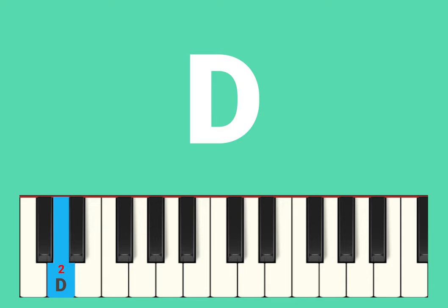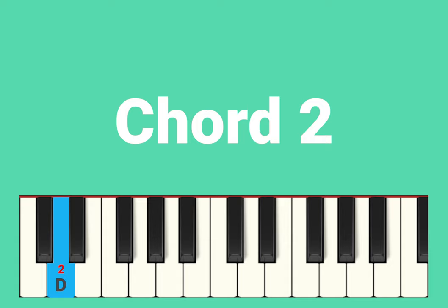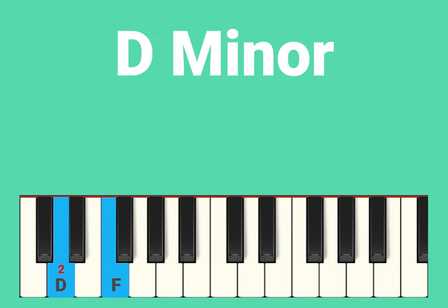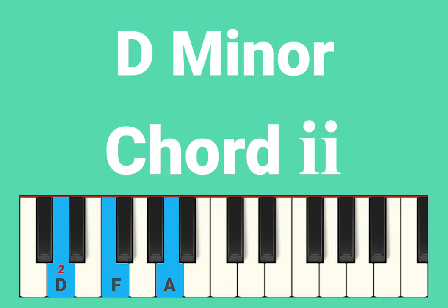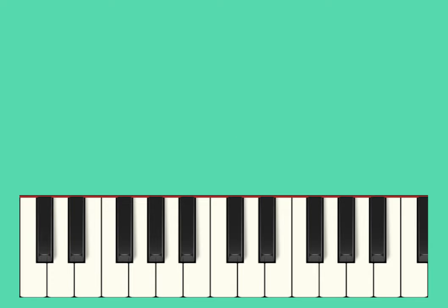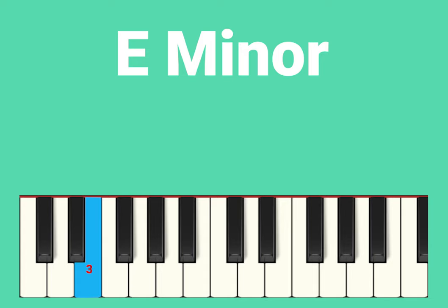If we go to the second note of the scale, we come to the letter D. This is chord two, and again just using the notes in the C major scale, they form a minor chord. Because it's minor, chord two would be shown using lowercase. Keeping up the scale, we next come to E. Starting on E and just using the white notes gives us an E minor chord — chord three.